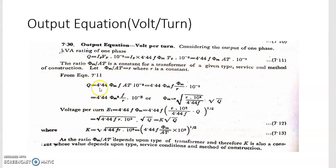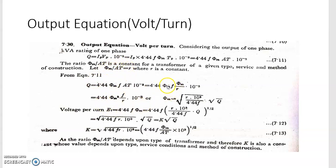Taking the equation KVA = 4.44 × phi_M × f × AT × 10⁻³, and since phi_M / AT = r, we replace AT by phi_M / r. This gives us phi_M squared. So phi_M × phi_M / r leads to the main equation. We need to find phi_M — the maximum flux — which equals the square root of (r × KVA × 10³) / (4.44 × f).